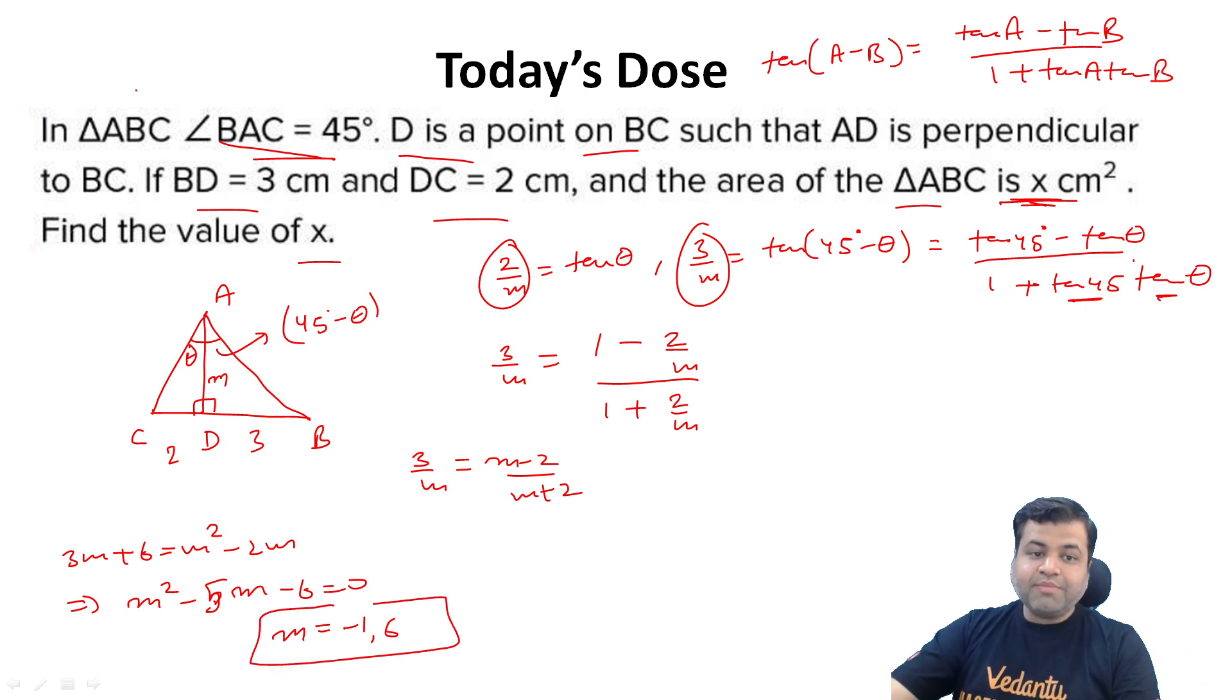Now we have to solve this quadratic and obviously the two values are minus 1 and 6. Length cannot be negative, so we reject minus 1, which means m is equal to 6. Right, okay?